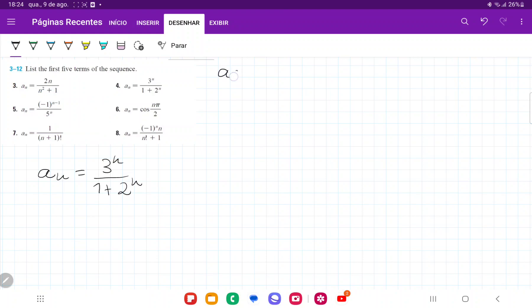We have a₁, and whenever we see n, we're going to plug in 1, so it's 3 to the power of 1 over 1 plus 2 to the power of 1. This gives us 3 over 3, which equals 1.